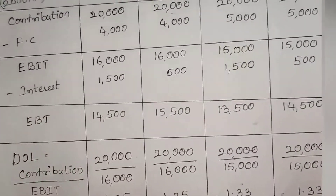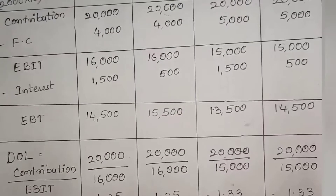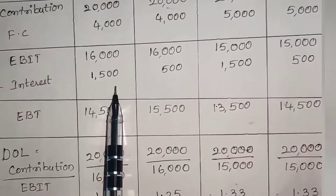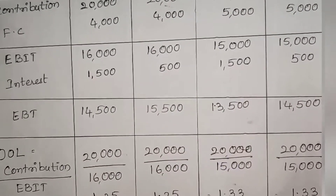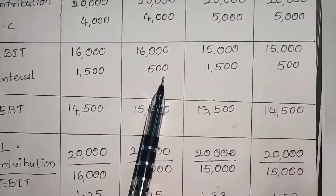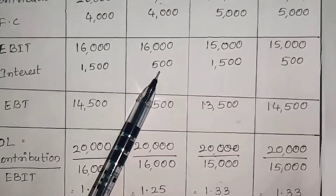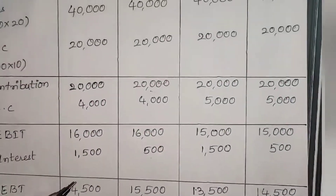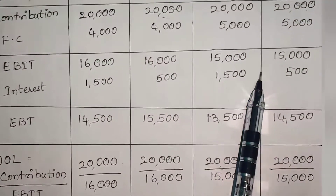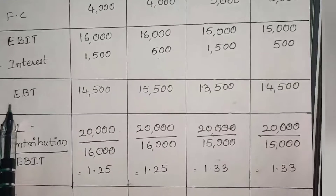Next we look at the financial plans. In financial plan A, equity is ₹5,000 and debentures are ₹15,000. At 10% interest, plan A interest is ₹1,500. In financial plan B, equity is ₹15,000 and debentures are ₹5,000, so 10% on ₹5,000 gives interest of ₹500. So plan A interest is ₹1,500 and plan B is ₹500 in both situations. After deducting interest we get EBT: ₹14,500, ₹15,500, ₹13,500 and ₹14,500 respectively.